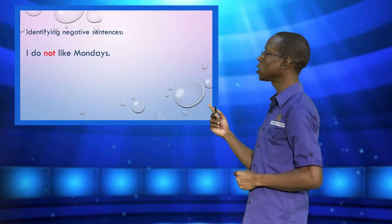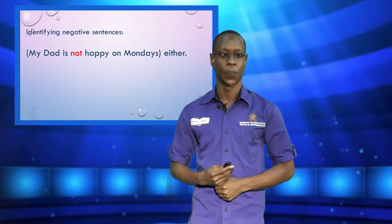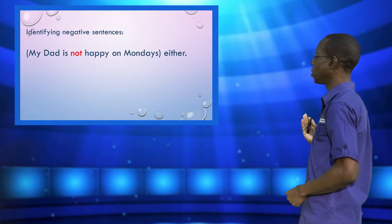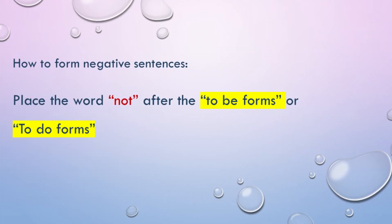'She does not enjoy doing all the housework by herself, so I will be sure to help her next time.' Now, how many negative sentences were in the story? The first one is 'I do not like Mondays.' The second is 'My dad is not happy on Mondays.' The word 'not' comes after the to-do form 'do' and the to-be form 'is.'